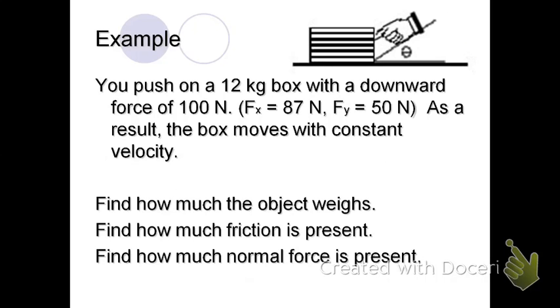So here we have an example. You push on a 12 kilogram box with a downward force of 100 newtons. And I'm giving you how much of that 100 newtons is. So the x component is 87, and the y component is 50. As a result, the box moves with a constant velocity. So we want three things. Find how much the object weighs. Find how much friction is present. Find how much normal force is present.